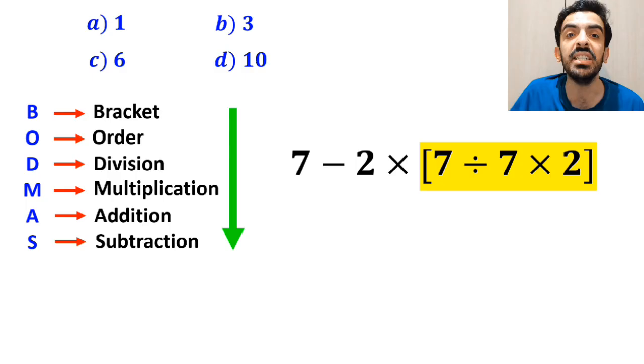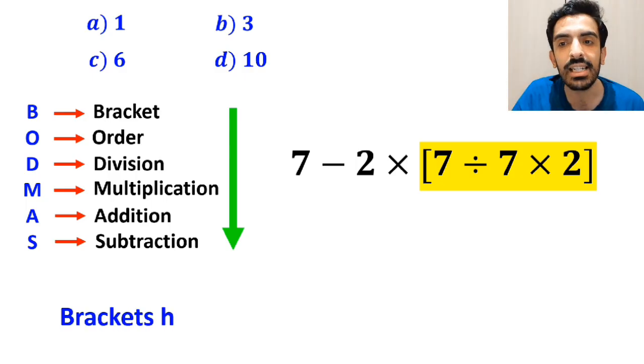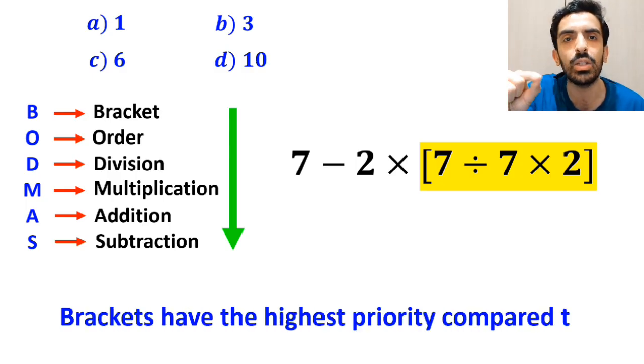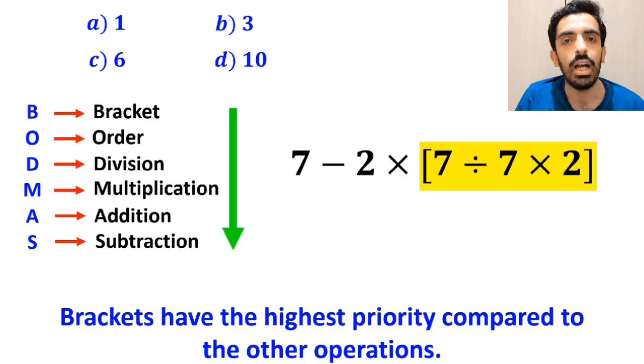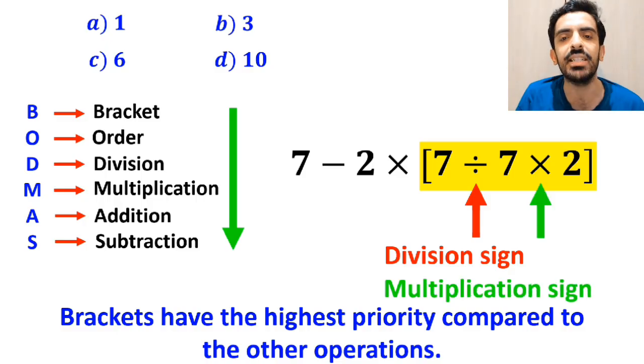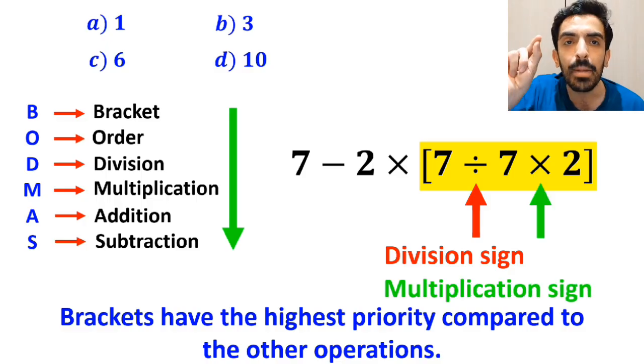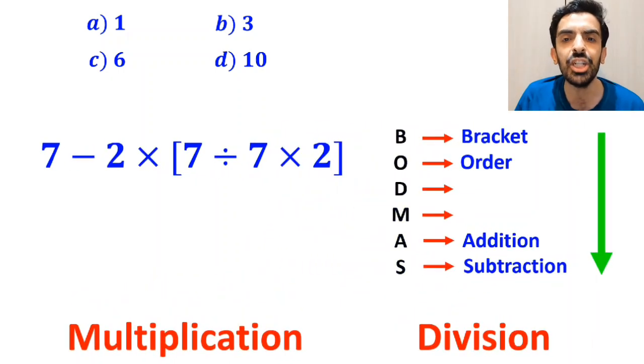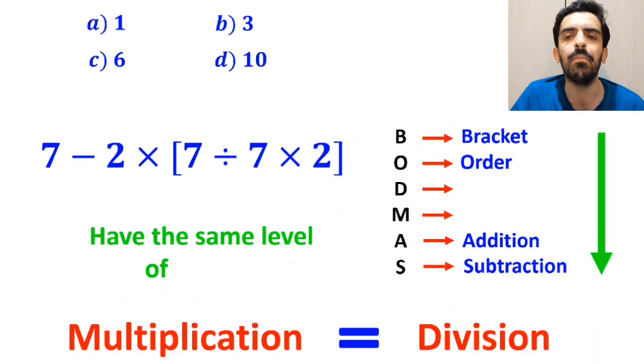First we start with the expression inside the brackets, because brackets have the highest priority compared to the other operations. As you can see in the image, inside the brackets we have a division sign followed by a multiplication sign. It's very important to keep in mind that according to the BODMAS rule, multiplication and division have the same level of priority.